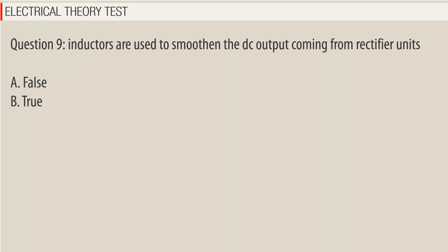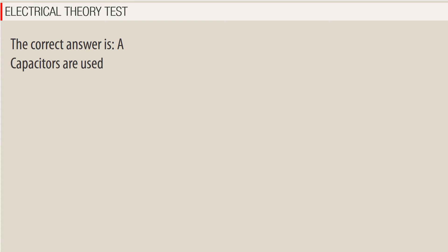Question 9. Inductors are used to smoothen the DC output coming from rectifier units. A. False. B. True. The correct answer is A — False. Capacitors are used.